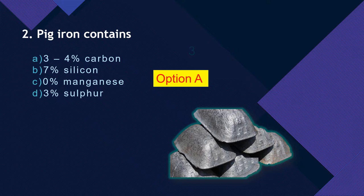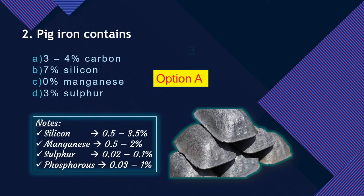In pig iron, silicon content is about 0.5 to 3.5%, manganese content is 0.5 to 2%, sulfur varies from 0.0 to 0.1%, and phosphorus varies from 0.03 to 1%. So pig iron contains sulfur and phosphorus in very meager amounts, while carbon is 3 to 4%.